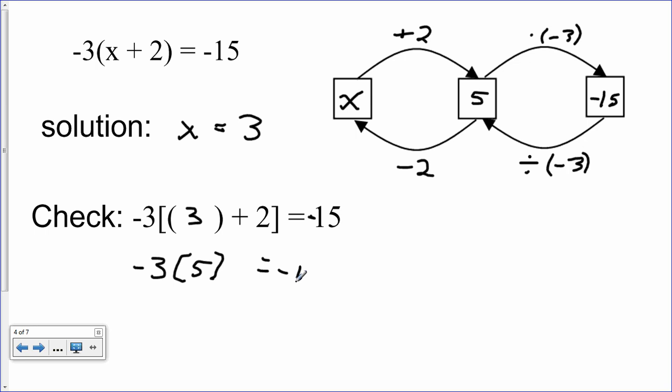And does that equal negative 15? Of course, it does. Negative 15 equals negative 15. You bet. So, we have correctly solved this equation. We know now that the number in the bucket was 3.